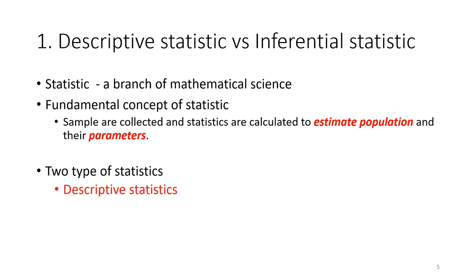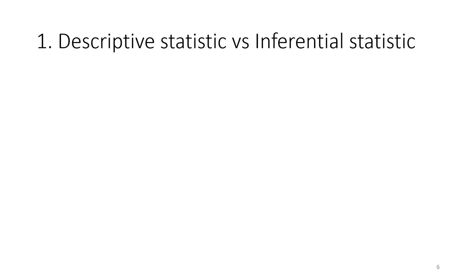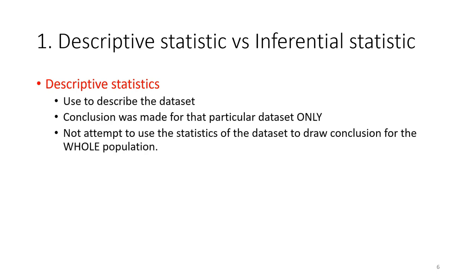There are two types of statistics: descriptive statistics and inferential statistics. Descriptive statistics is used to describe a dataset, which can be a sample or population, and the conclusion is made for that particular dataset only. If you derive any conclusion from the dataset, it only applies to that dataset. There's no attempt to use the statistics of the dataset to draw a conclusion for the whole population.